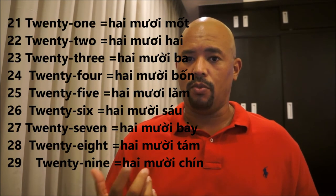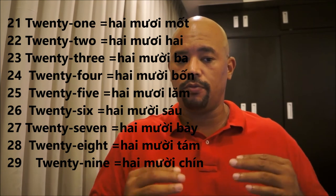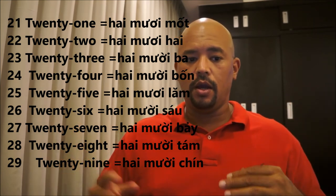Moving on, it looks like once you get into the 20s, it's just the same thing. So it would be 'hai mươi mốt' — you just keep going with the 2 tens, 1. That's what it looks like all the way up until 29. So that's the formula: your first number tells you how many tens, the second is your tens marker, and the third is your single digit place.